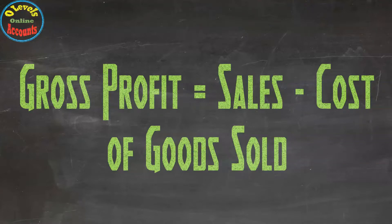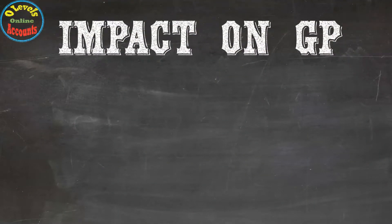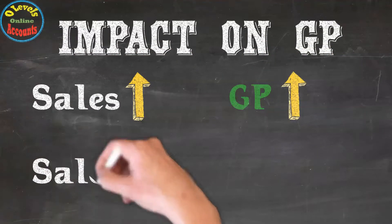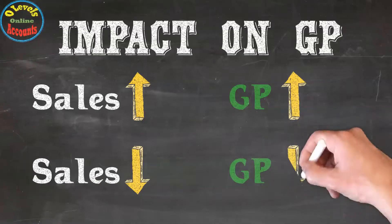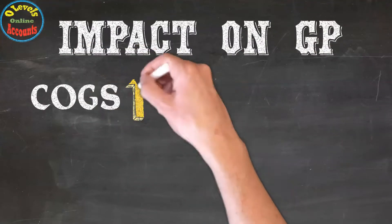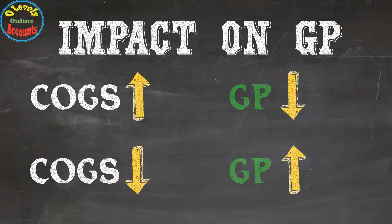Here are some impacts on gross profit. First, sales: when sales increase, gross profit also increases, and vice versa. Sales and gross profit have a direct proportion to each other. Regarding cost of goods sold: when cost of goods sold increases, gross profit decreases, and vice versa. Cost of goods sold and gross profit have an indirect relationship with each other.